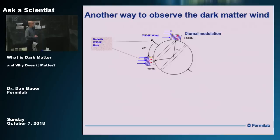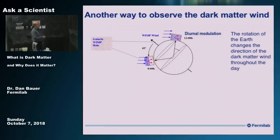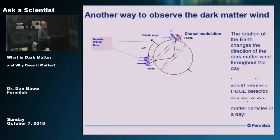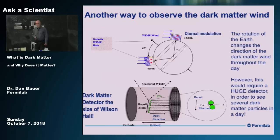You could take that concept further — think about the daily rotation of the Earth. If you have a detector on the Earth's surface and there's a galactic dark matter wind, then as it hits the detector at different times of day, it could cause recoils from dark matter to go in different directions. If you could sense that direction difference, you'd be in good shape. The problem is you'd have to see several dark matter particles per day to make that work, and we haven't seen one in 20 years of looking. This may be a technique used if we start to see dark matter — but you'd need something the size of Wilson Hall to get that sort of rate.